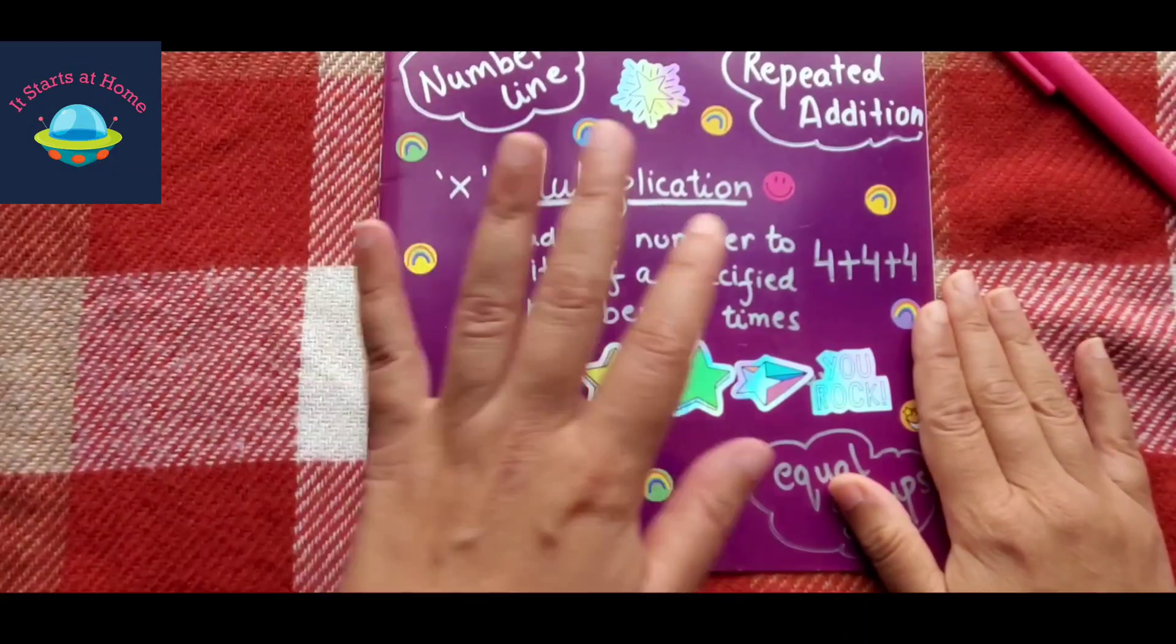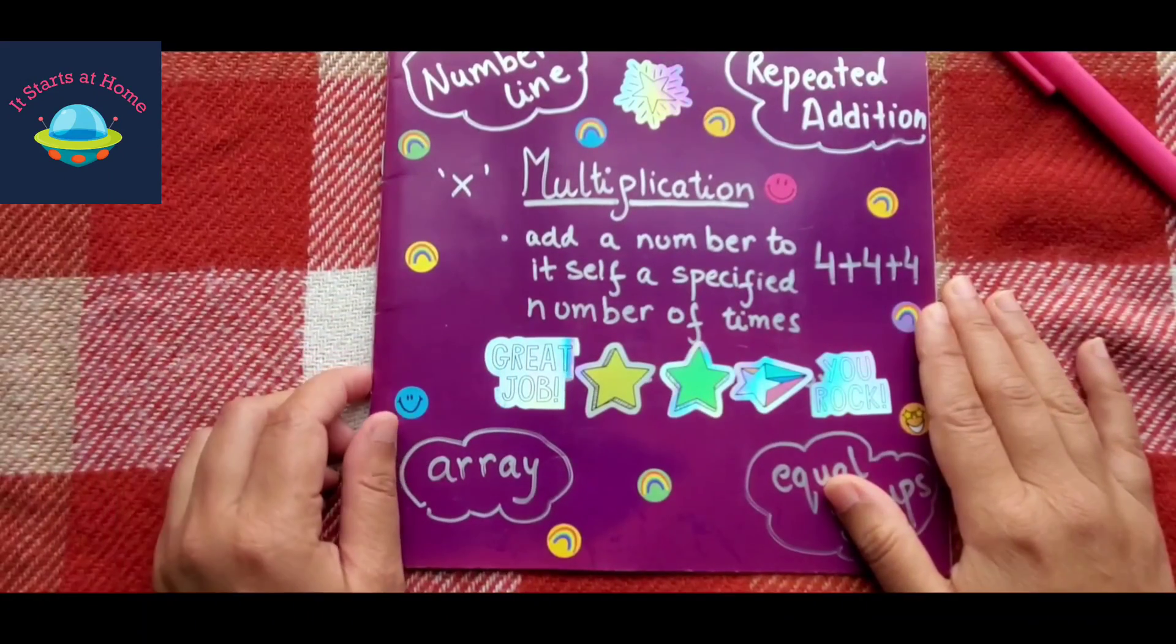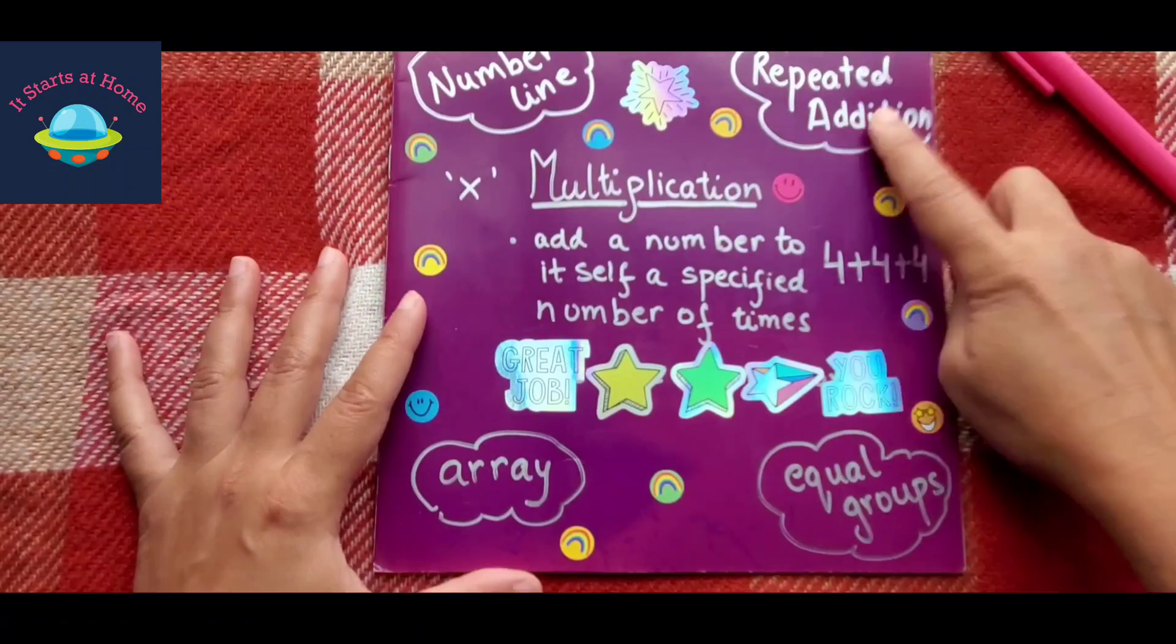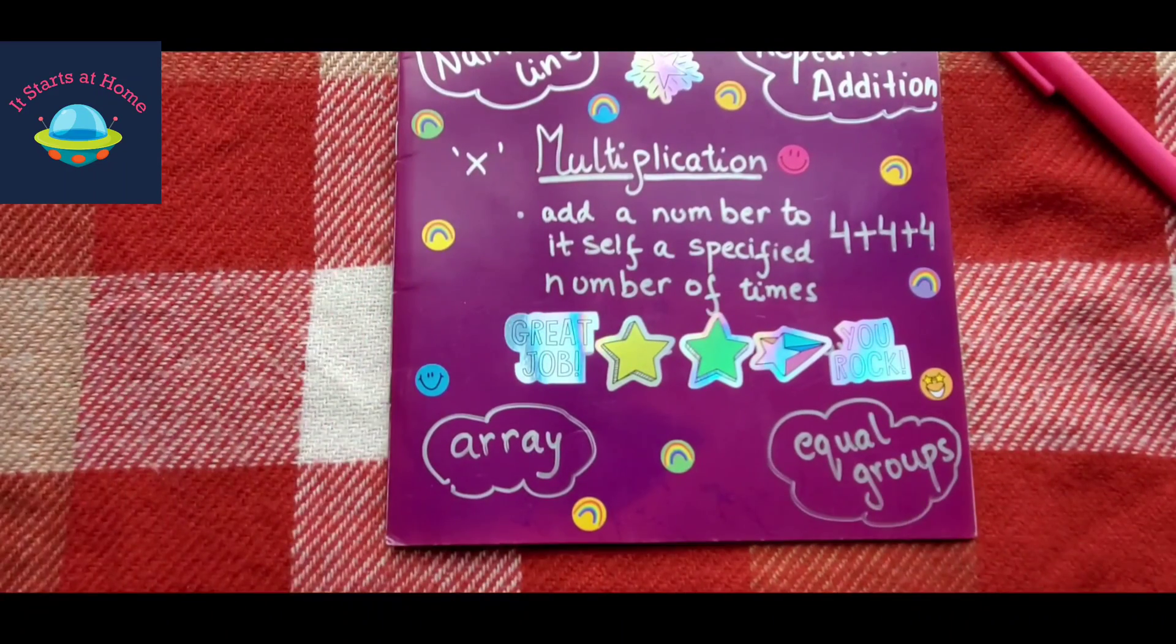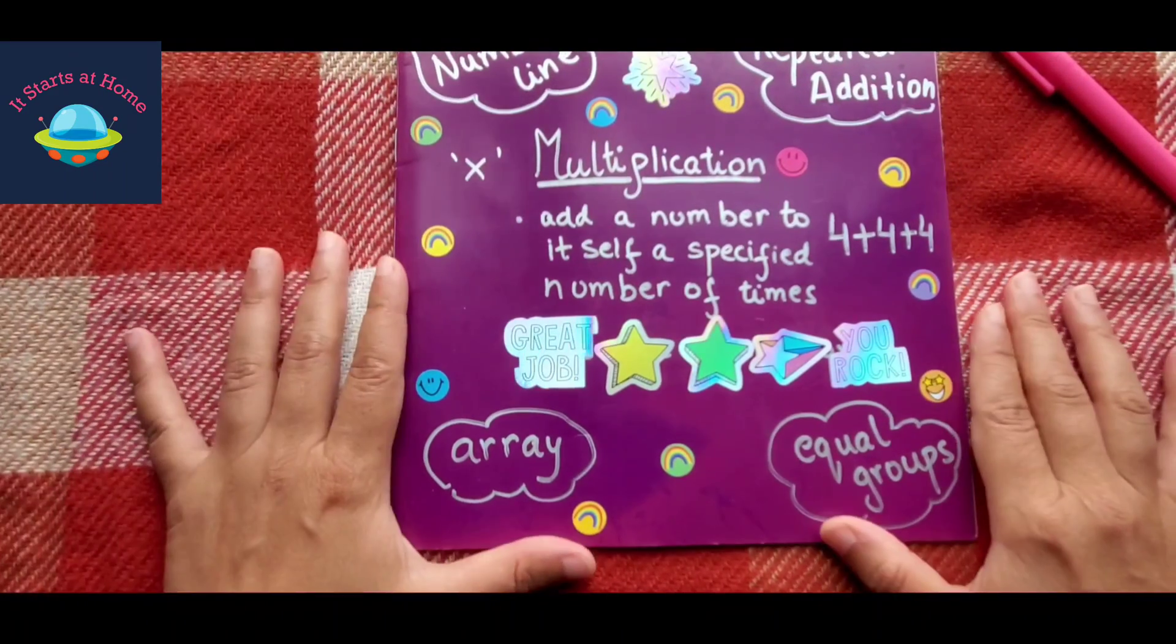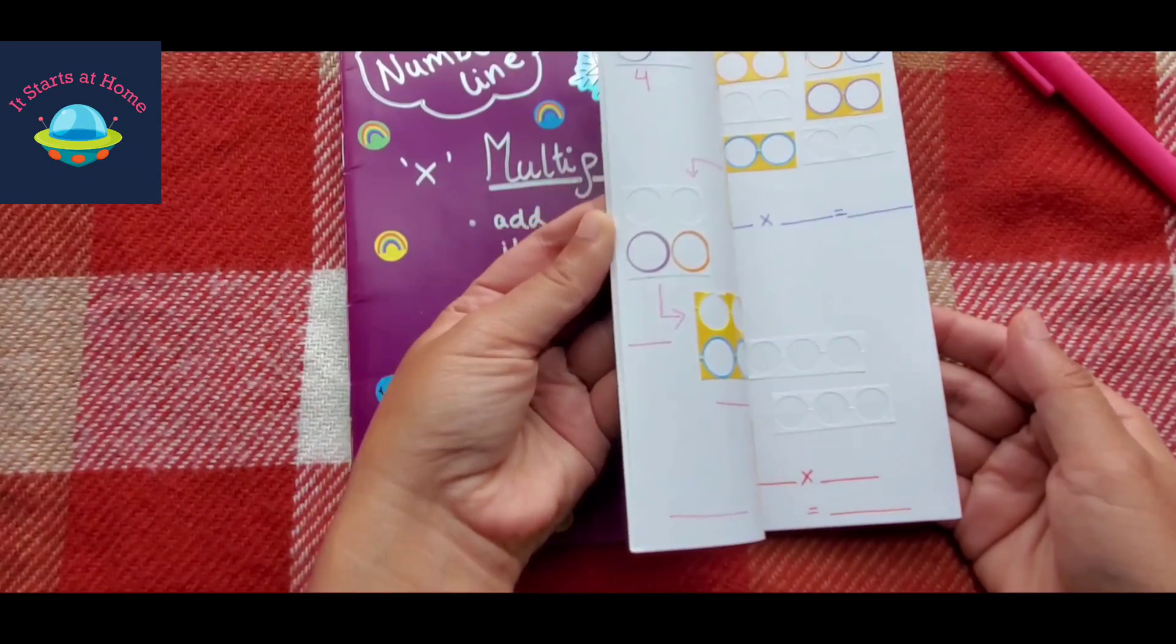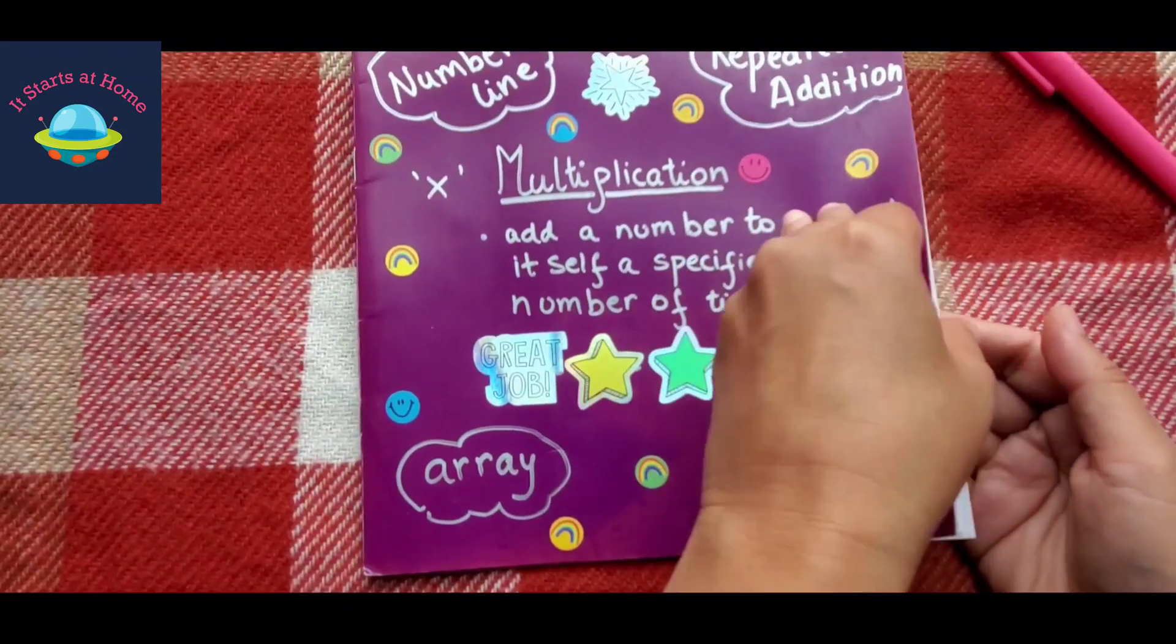Alright guys, this is the book that I was talking about. This is for multiplication so I'm using repeated addition, array, equal groups, and many more super cool activities in multiplication. The book is totally covered with a lot of DIYs, so let's get going.